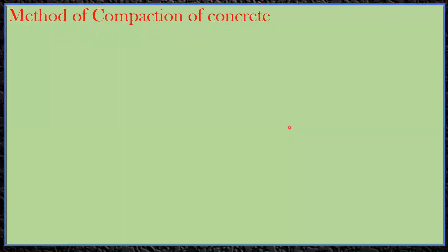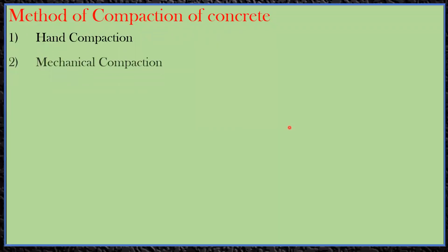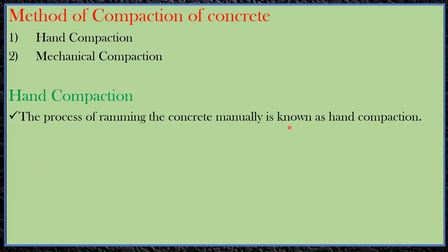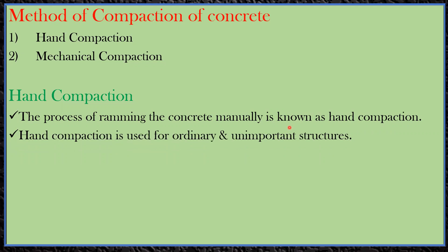The methods of compaction of concrete are hand compaction and mechanical compaction. Under hand compaction, the process of ramming the concrete manually is called hand compaction. Hand compaction is used for ordinary and unimportant structures. We'll see where exactly the application of hand compaction comes.